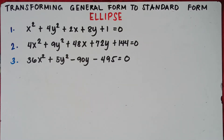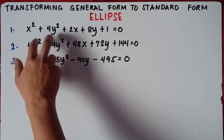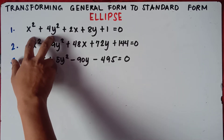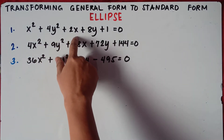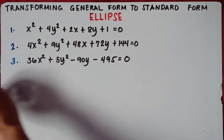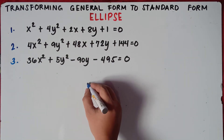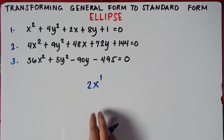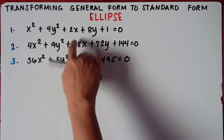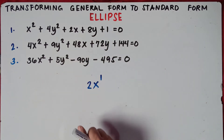So for part 1 of our video, we will be answering number 1. We have two quadratic terms — x squared and y squared — and two linear terms. A linear term is a number together with a variable with an exponent of 1. So we have two linear terms, x and y, and then one constant.